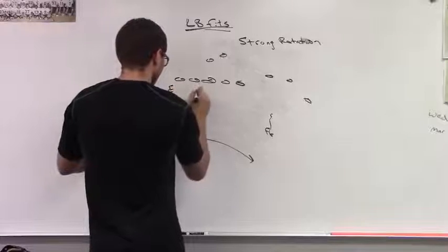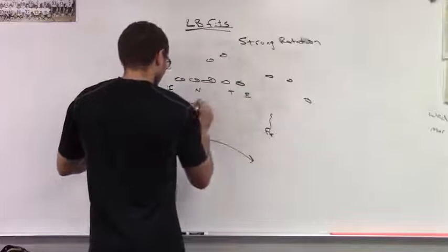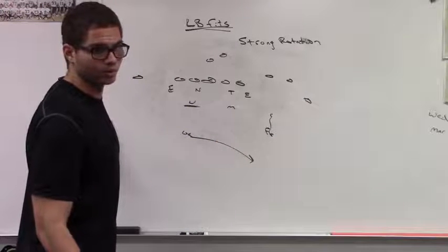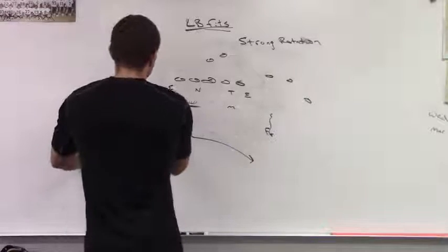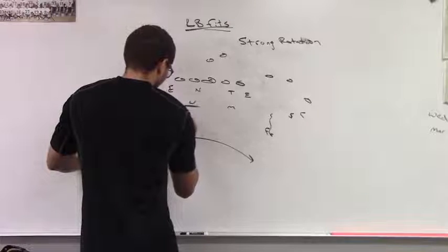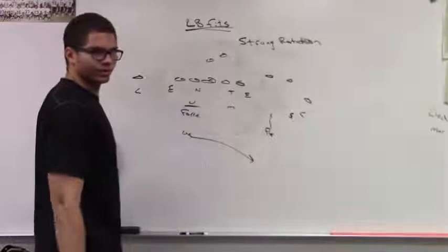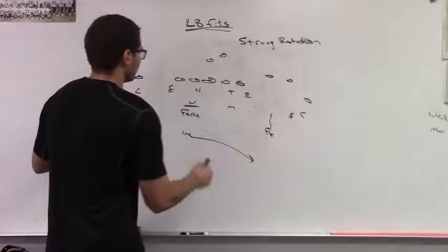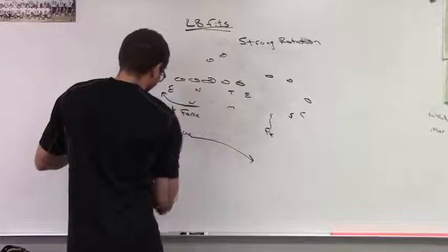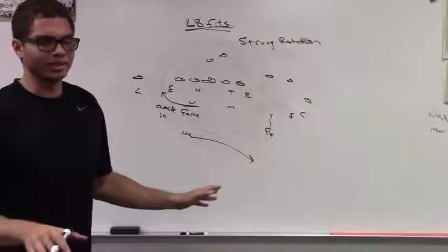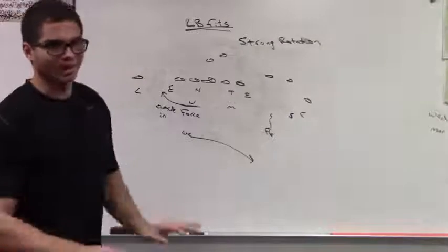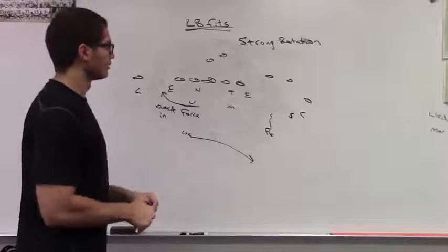In our strong side rotation coverages, our weak side linebacker — so this would be Will — in cover one or Mabel coverage, he has to be the force defender to the weak side. He has to stay outside-in on any puller. He cannot get deep and thick. He needs to keep his outside arm free and stay outside-in. Do not let anybody get outside.